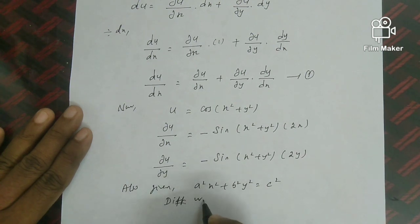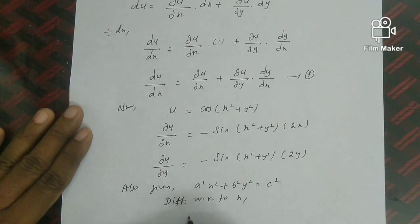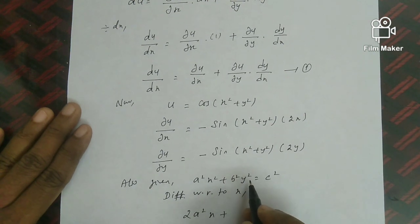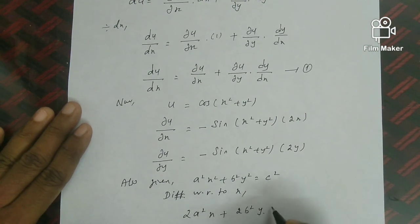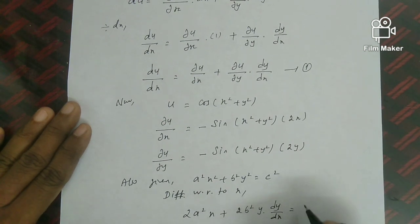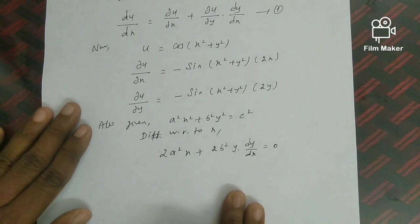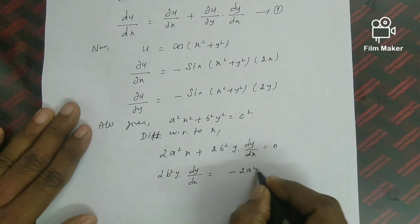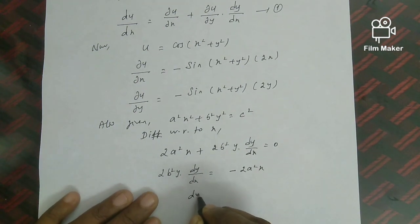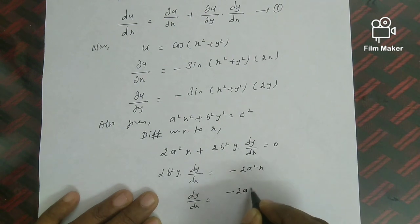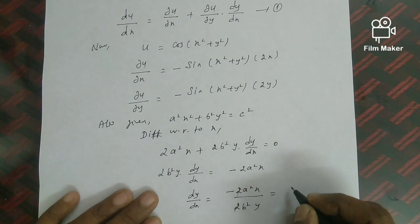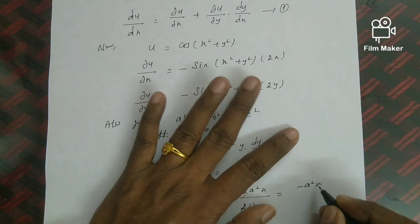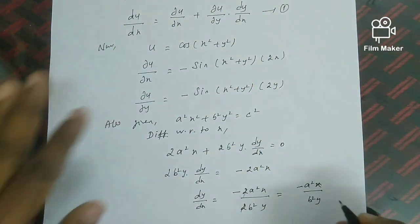So 2b²y·(dy/dx) = −2a²x. Therefore dy/dx = −a²x/(b²y). Now substituting ∂u/∂x, ∂u/∂y, and dy/dx into equation 1: du/dx = −sin(x²+y²)·2x + [−sin(x²+y²)·2y]·[−a²x/(b²y)].